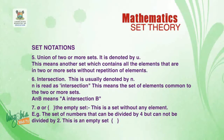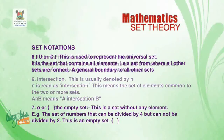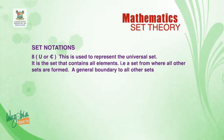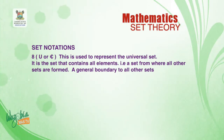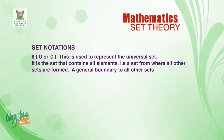Number seven — the empty set, denoted by open and close brace brackets with nothing inside. This is a set without any element. For example, any figure that can be divided by four but cannot be divided by two — you cannot find any such number, so that is an empty set. Number eight — mu or epsilon, used to denote the universal set, which is a set that contains all elements and forms a general boundary from which all other sets are derived.